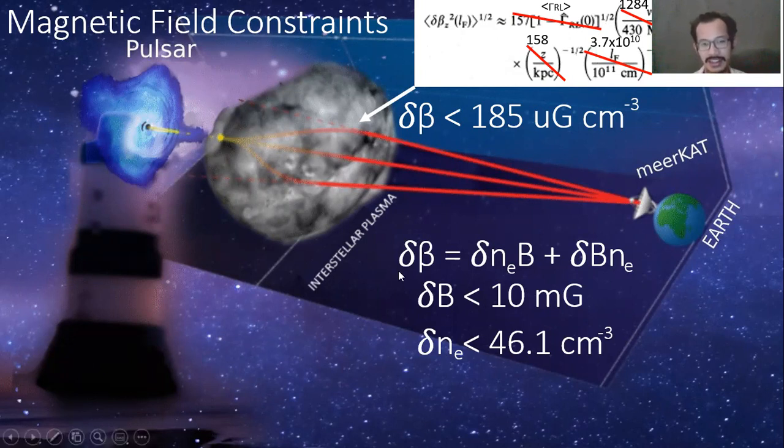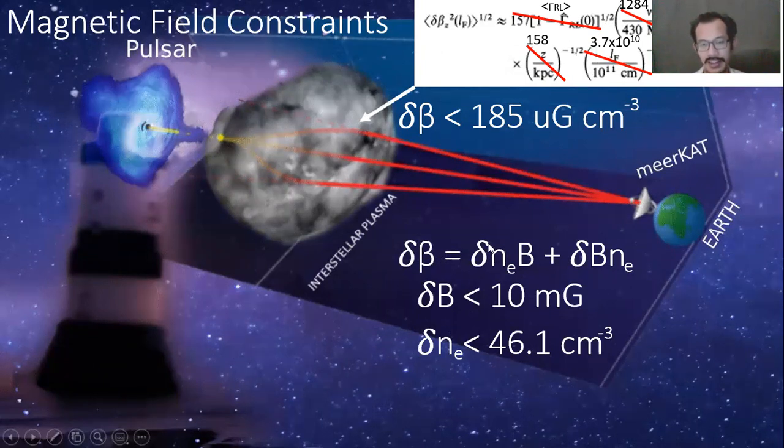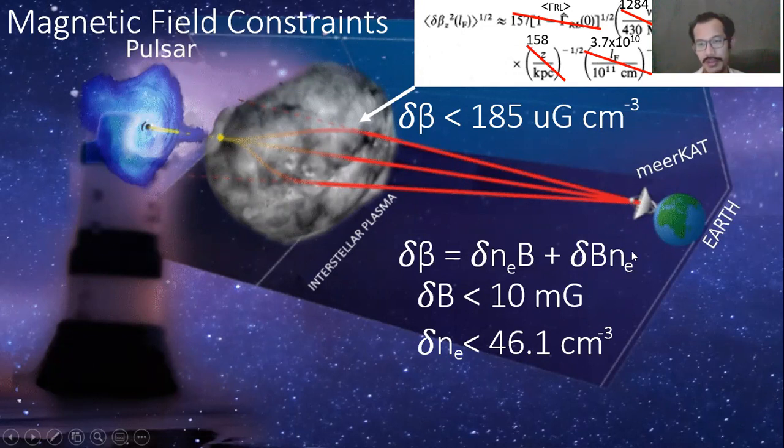And since delta beta is a composite value, we can set, for example, delta B here to constant, we can set delta N_E to constant. And for a probable value of N_E towards 0437, which is about 0.017 per centimeter cube, we get delta B upper limit as less than 10 milligauss, which doesn't make much sense. And when we set delta B to constant and for a probable value of this B as 4 microgauss, which is probable value of interstellar medium, we find fluctuations of N_E to be less than 46.1.